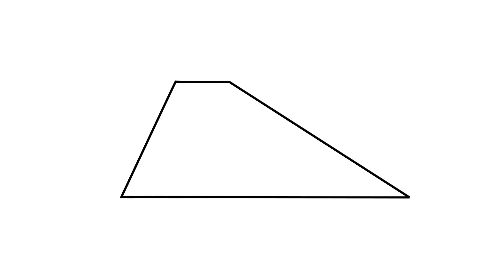Let's say we have this trapezoid with these lengths. The top base is 2, the bottom base is 10, and the height is 5. Now let's say we don't know the trapezoid area formula — how would we find the area? Well, one really useful strategy is to try to chop up a problem into smaller, simpler problems that we do know how to solve.